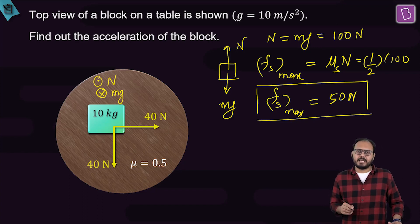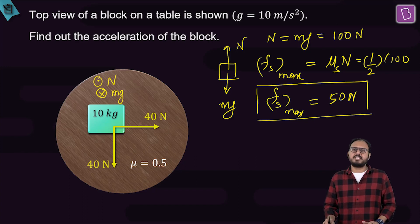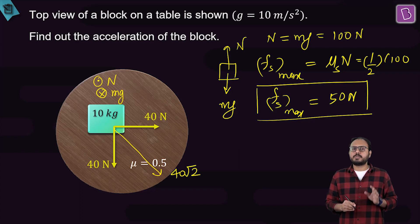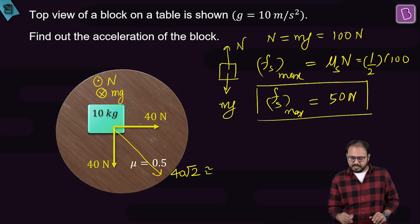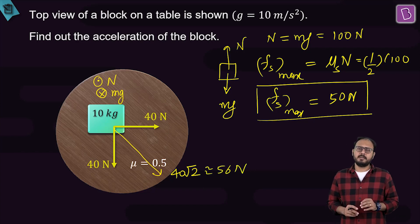Why did we find that out? What is the net force acting on the block? 40 right, 40 down. That is square root of 40 squared plus 40 squared. That net force is 40 root 2. Root 2 is approximately 1.4, and 1.4 times 40 is approximately 56 newton. Is the net force acting more than the static friction maximum value? Yes, because 56 is more than 50, so it will slide.